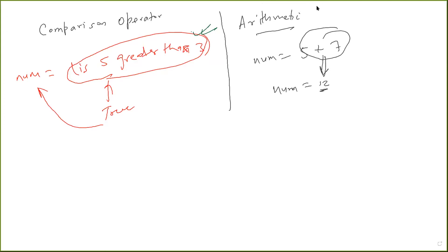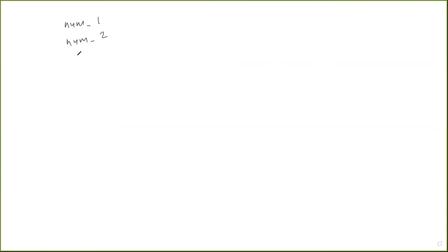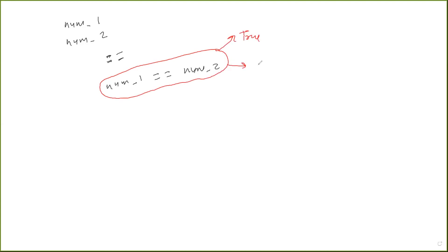Let's look at different comparison operators conceptually, then we'll look at how to implement them in Python. Suppose we have two numbers num one and num two, and we want to compare if both the numbers are equal or not. We do it using a double equal to sign: num one == num two. This can either generate true or false — both numbers will either be the same or they will not be the same. This is called the equal to operator — it returns true or false based on whether two numbers are the same.